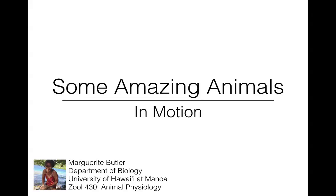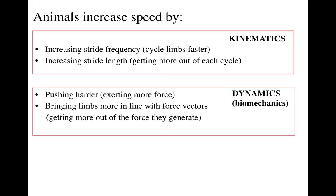In class we talked about terrestrial locomotion but I ran out of time to show you some videos. Some of the things that people study when we study locomotion is how animals increase speed — they can do that by either changing their kinematics: increasing how quickly they cycle their limbs, which would increase stride frequency, or you could also increase your stride length, which is how far you travel in each limb cycle. Or you can change your dynamics or biomechanics and actually exert more force by pushing harder.